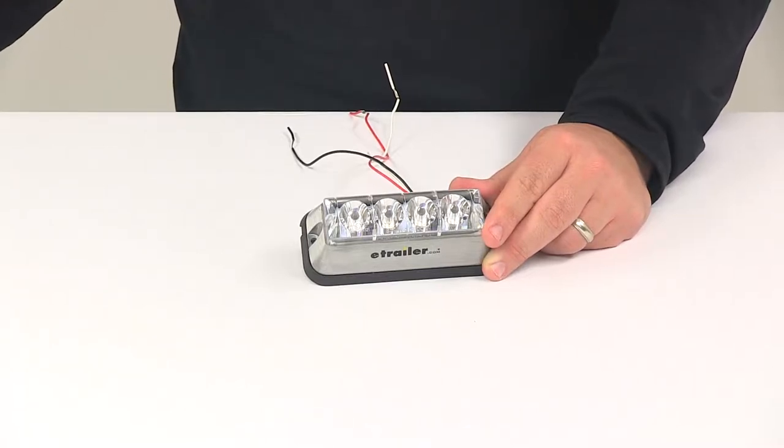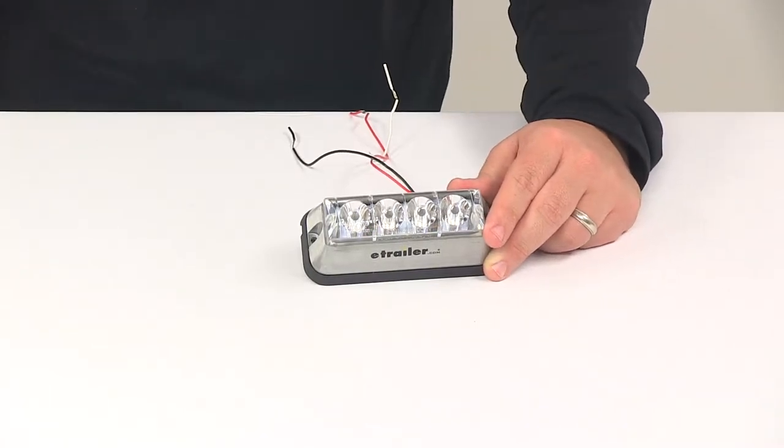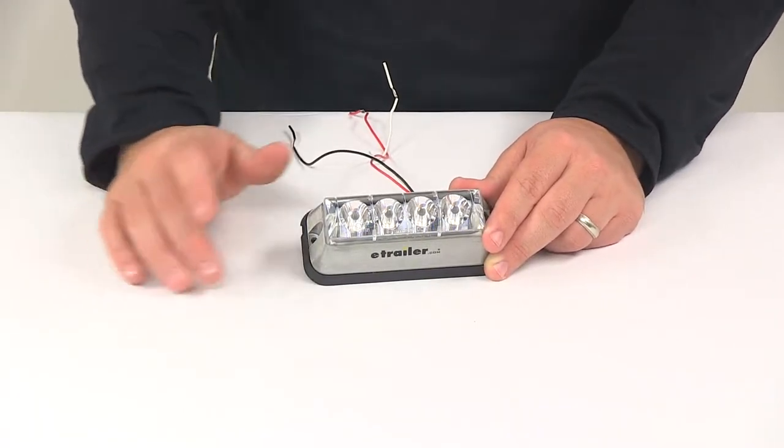Today we're going to be taking a look at the Custer 4 LED strobe light or running light. This light features two functions. It can be used as a running light or it can be used as a strobe light.